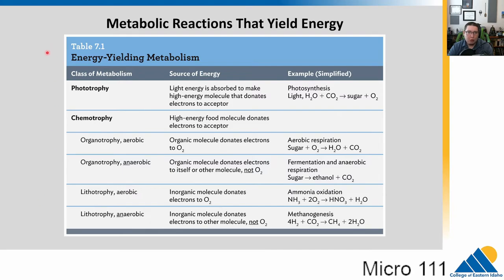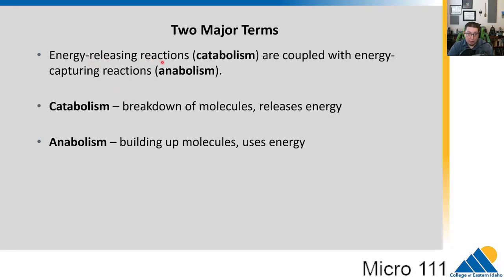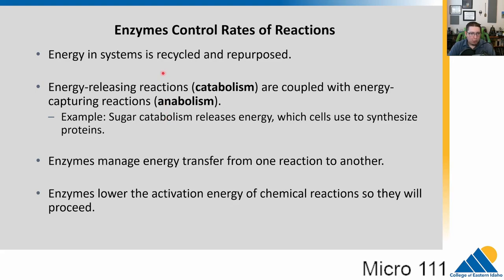Ultimately, these are all energy-releasing reactions — that's the goal of catabolism. That energy is then coupled to new reactions that build up new molecules through anabolism. So you eat sugary food, break it down, energy is released, and then you use that energy to build up new biomass in your body. Enzymes control all of this — energy cycles around, with enzymes managing the different steps of catabolism and anabolism. For example, sugar releases energy, and the cell synthesizes new proteins from that. Enzymes manage that energy transfer and keep it controlled.